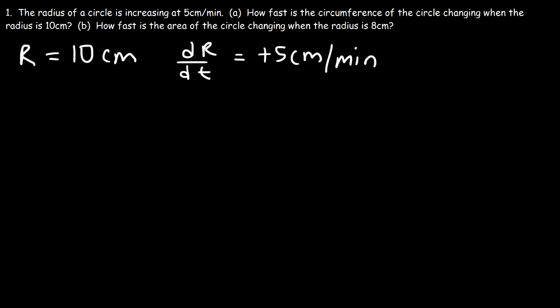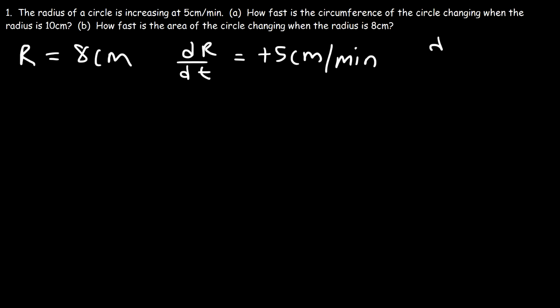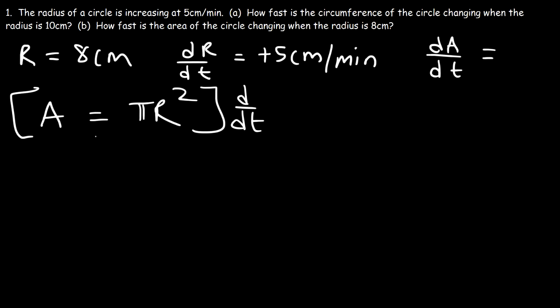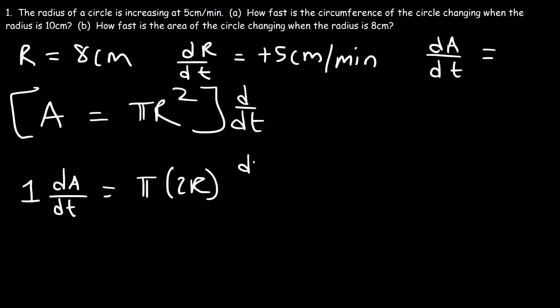Now let's move on to part b. How fast is the area of the circle changing when the radius is 8 centimeters? So r is now 8, and dr/dt is still 5 centimeters per minute. Our goal is to calculate da/dt, the rate at which the area of the circle is changing. The equation connecting a and r is the area of a circle: a = πr². Differentiating with respect to time gives da/dt = π · 2r · dr/dt.